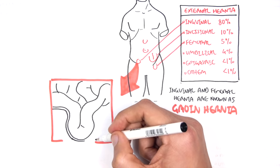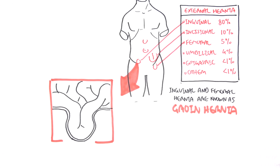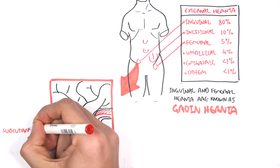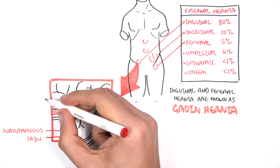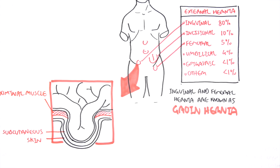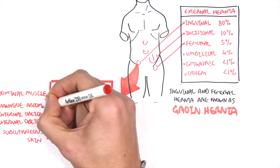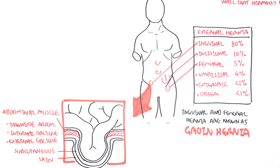In an inguinal hernia, the intestine is the organ that actually bulges out or pushes out of the wall that normally contains it, which is the abdominal wall. The abdominal wall is comprised of, from the outside: the skin, the subcutaneous tissue, and then the abdominal muscles. There are three abdominal muscles: from the outside, the external oblique, the internal oblique, and then the transverse abdominis. So an inguinal hernia is essentially the bulge or protrusion of the intestine through the abdominal wall.